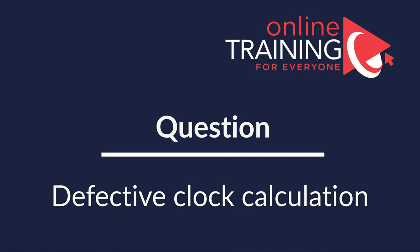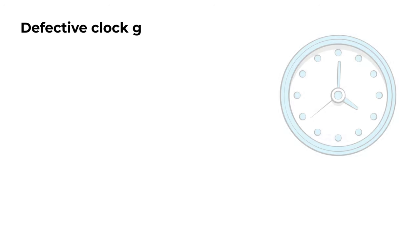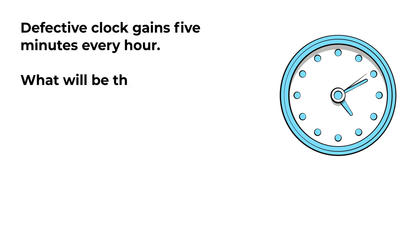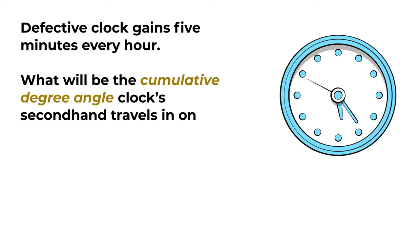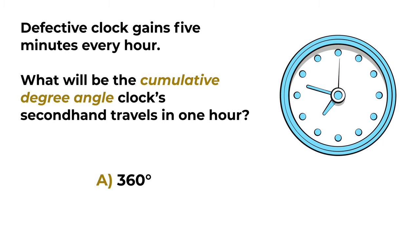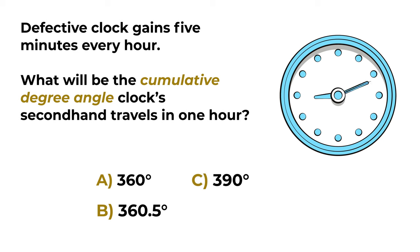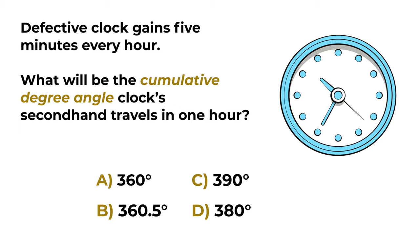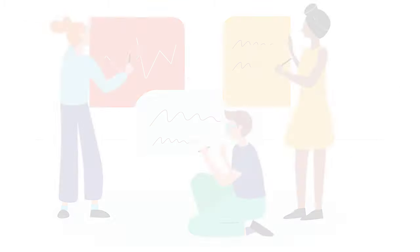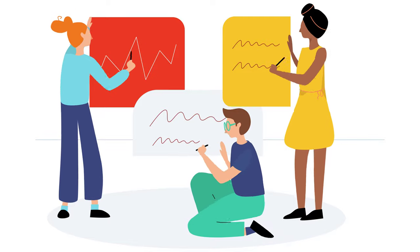Here's an interesting question which may not be as easy as it looks. A defective clock gains five minutes every hour. What will be the cumulative degree angle the clock's second hand travels in one hour? You have four choices: choice A, 360 degrees; choice B, 360.5 degrees; choice C, 390 degrees; choice D, 380 degrees. Give yourself a little time to solve this challenge.